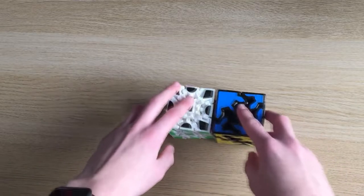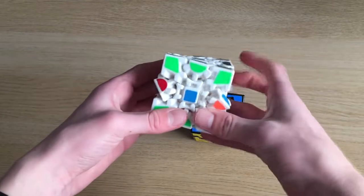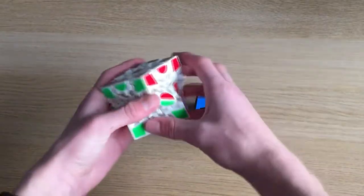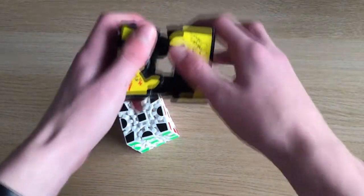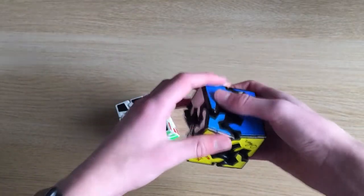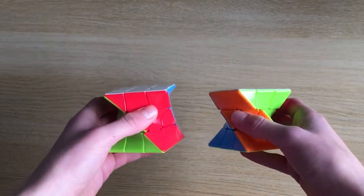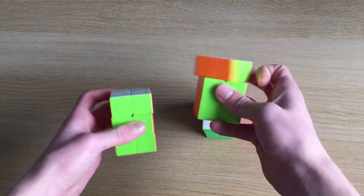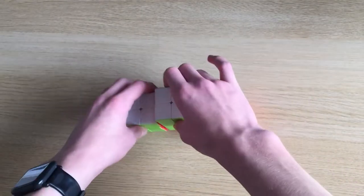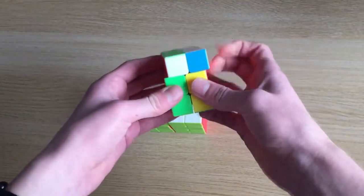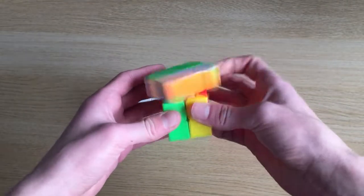Moving on to my non-WCA puzzles. We have a gear 3x3. And a gear shift, which you can split apart and turn, which is kind of cool. I've got three random snake cubes. I have two twisted 3x3s. For my cuboids, I have two 2x2x3s. These are both quite nice. And I also have this 3x3x2, which is quite nice as well. Very smooth.